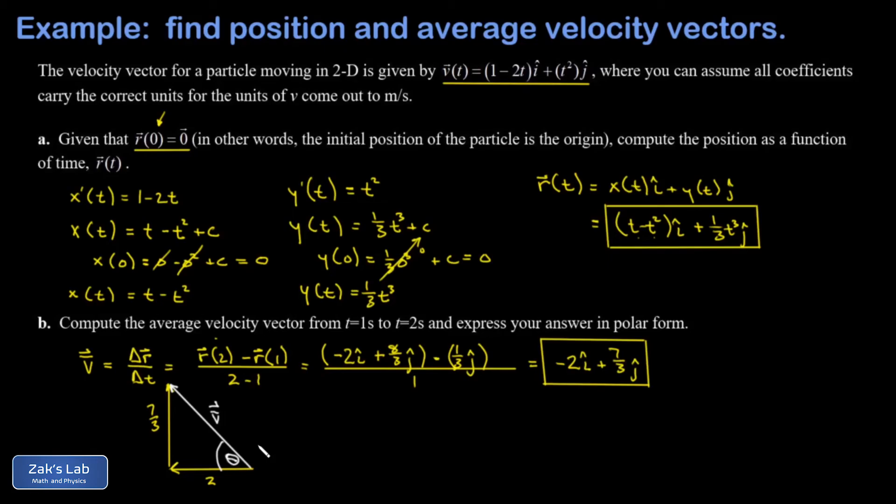So the magnitude of that average velocity vector is given by the Pythagorean theorem, and I get a square root of two squared plus seven thirds squared. And to three sig figs I get a magnitude of 3.07 meters per second. And then the angle theta is the angle whose tangent is seven thirds over two, and to three sig figs I get 49.4 degrees.